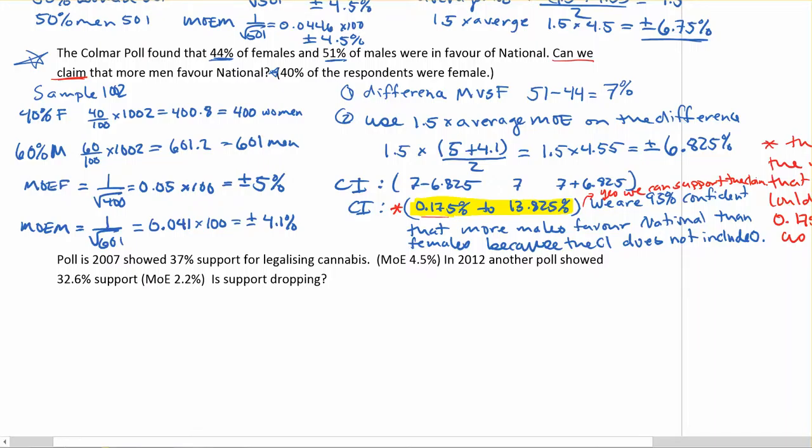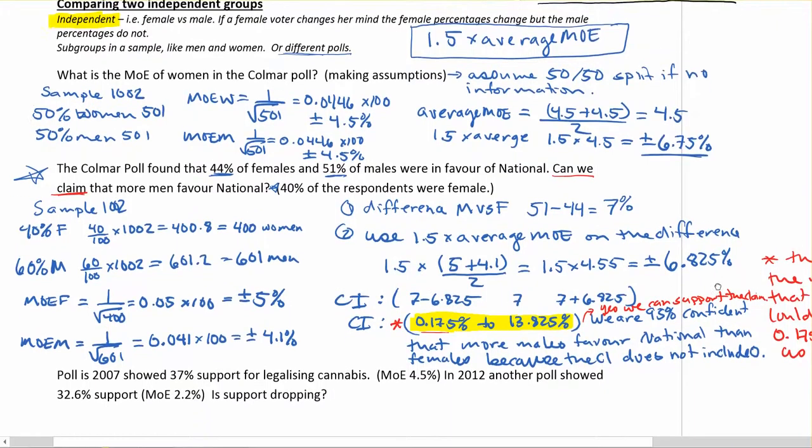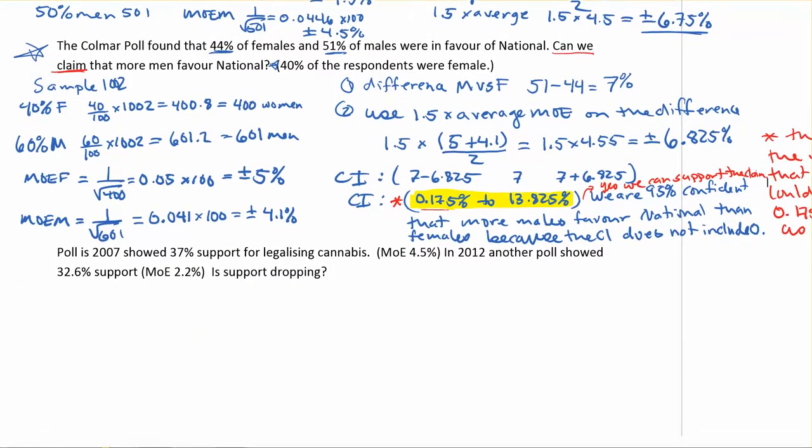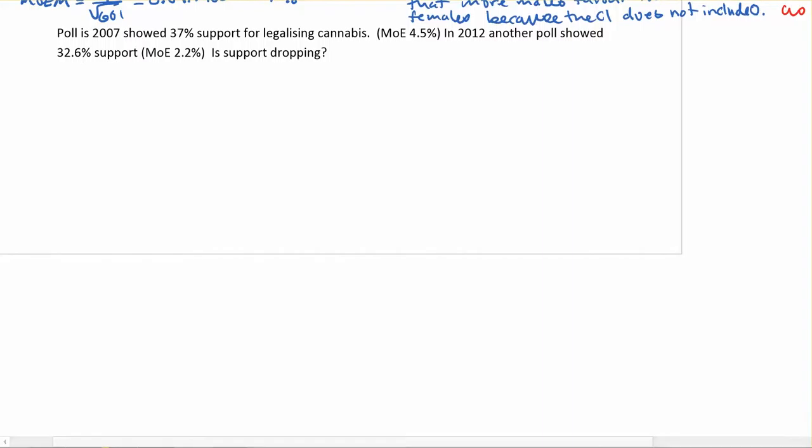Alright, so taking a look at our last example about when we have two independent groups that we're comparing. A poll in 2007 showed 37% support for legalizing cannabis, a margin of error of 4.5%. In 2012, another poll showed 32.6% support with a margin of error of 2.2%. Is the support dropping?